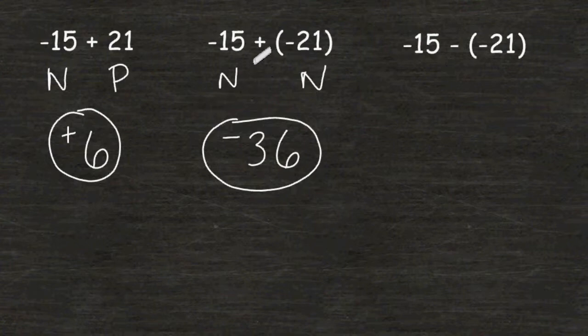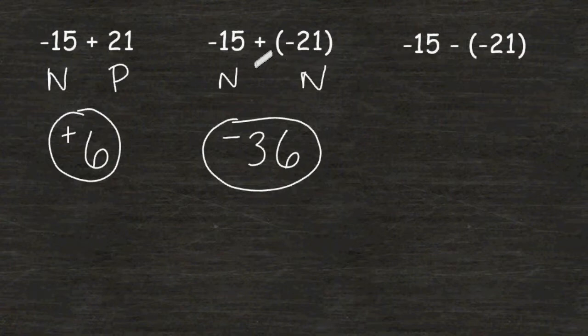It's kind of like saying we went 15 below zero, and from there we went 21 more below zero from negative 15. So altogether, we would have a distance of 36 below zero.